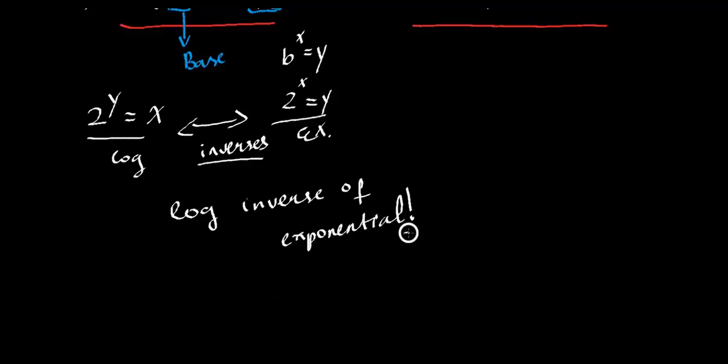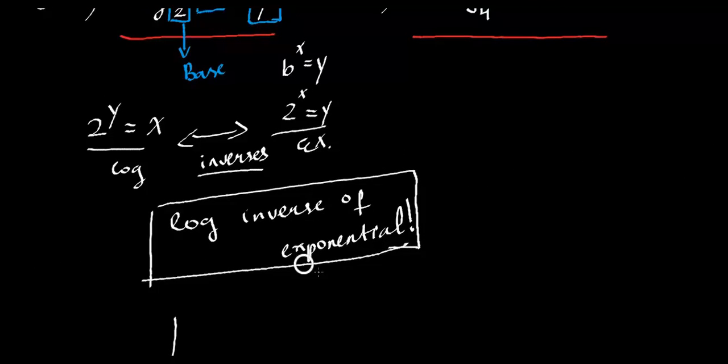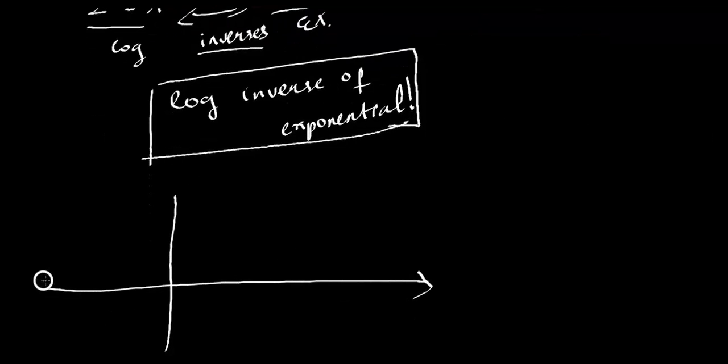And then if we know that, we may have an idea of how the graph may look. Well, let's see if we can predict. So if we just graph an exponential, which is just 2 to the x equals y, the exponential looks something like this, correct? Something like that. This is 2 to the x equals y.